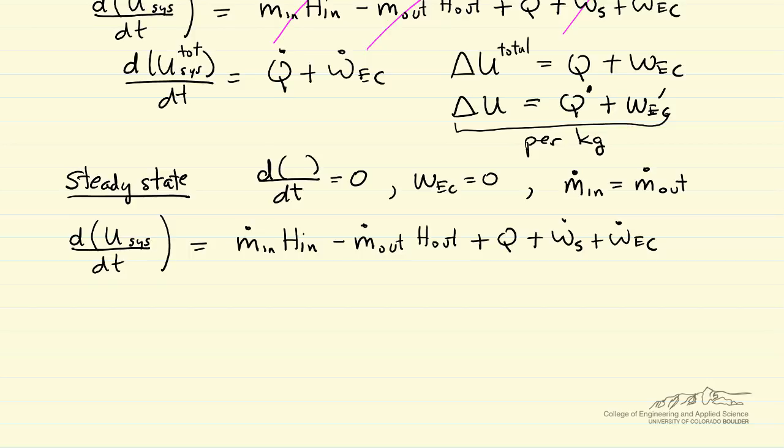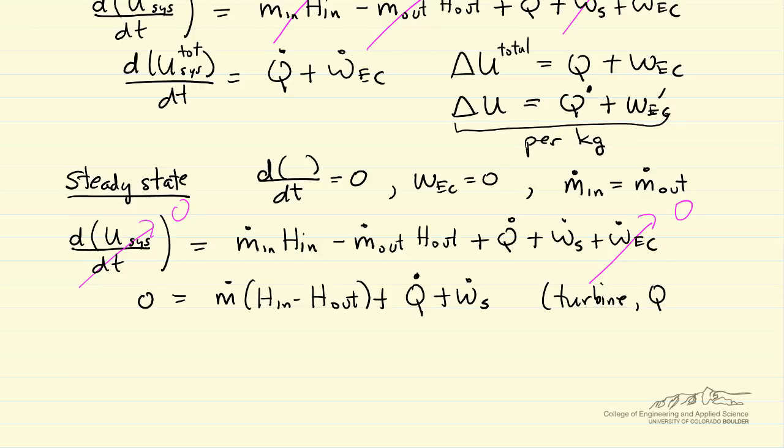So then this equation simplifies. This term is zero, and this term is zero. And so let me write down, combine some terms. And so this would be the equation, for example, if we had a turbine where we're generating work from change in enthalpy, pressure drop. The Q term is often zero for a turbine. So this is per time, we could also write this per kilogram.